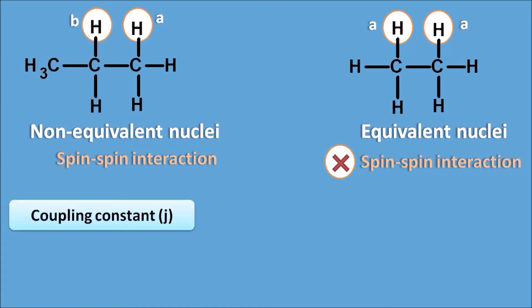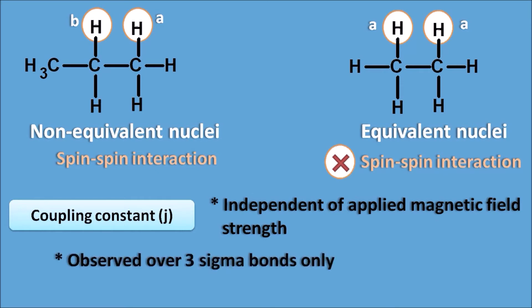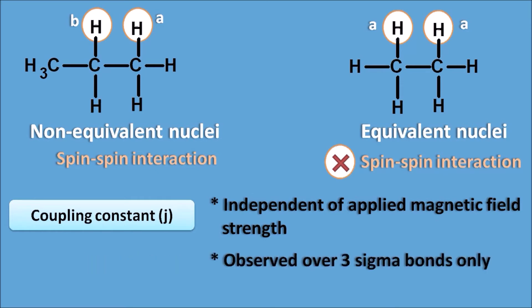Spin-spin interaction is measured by the coupling constant J. J has some important properties: it is independent of the applied magnetic field strength, so if you increase the magnetic field strength the coupling constant will not increase proportionally. It only depends on the spin-spin interaction between two different nuclei, and it is observed over three sigma bonds only. The coupling constant cannot be observed over longer distances — only for protons separated by three sigma bonds.